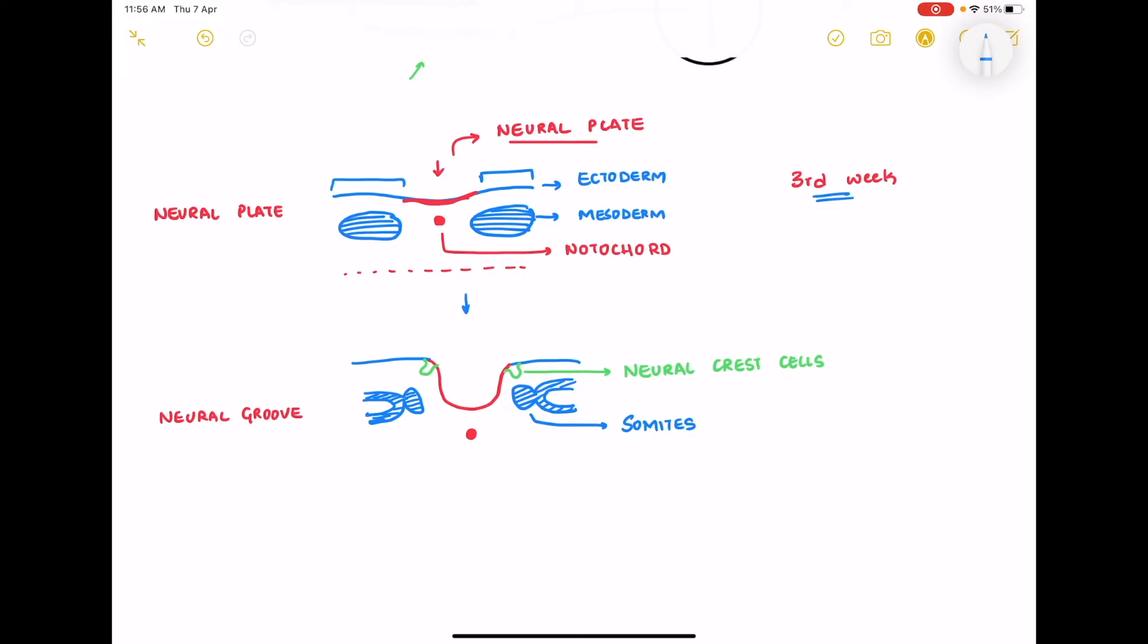Along with that the ectodermal cells at the junction of the neuroectoderm and the surface ectoderm starts protruding out and this forms the neural crest cells. And as you can see the mesoderm is slowly developing alongside the neural tube and forms the somites.